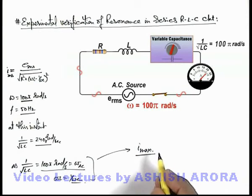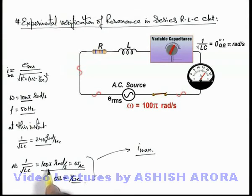If we further increase the capacitance, you can see the value of 1 by root LC decreases below 100π radians per second, and the circuit current again starts decreasing.